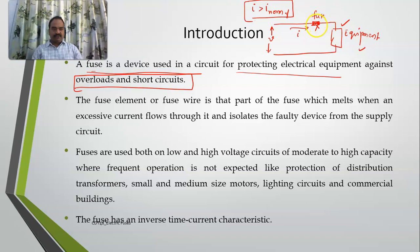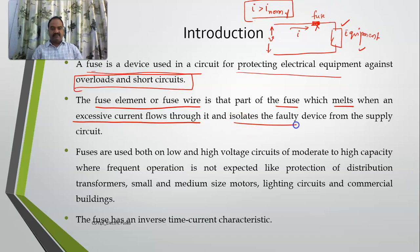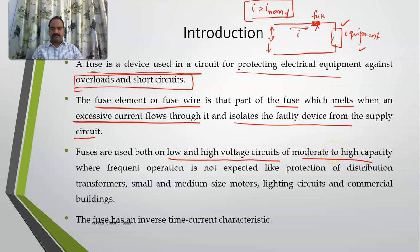The fuse consists of a fuse element or fuse wire, which is the part of the fuse that melts when an excessive current flows through it and isolates a faulty device from the supply circuit. You can use these fuses for both low and high voltage circuits of moderate to high capacity where frequent operation is not expected.